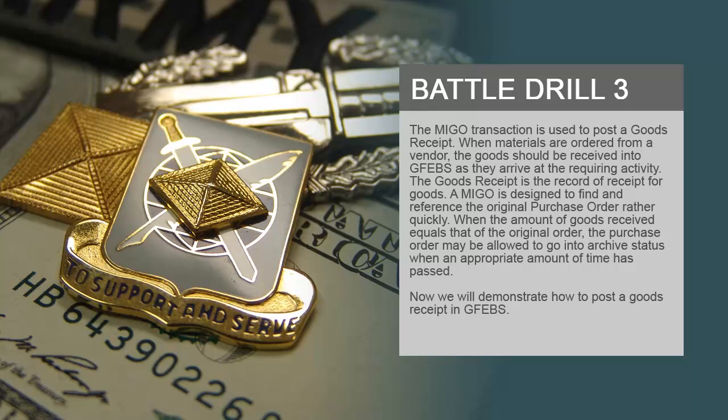The AMIGO transaction is used to post a goods receipt. When materials are ordered from a vendor, the goods should be received into GFibs as they arrive at the requiring activity. The goods receipt is the record of receipt for goods. AMIGO is designed to find and reference the original purchase order rather quickly. When the amount of goods received equals that of the original order, the purchase order may be allowed to go into archive status when an appropriate amount of time has passed.